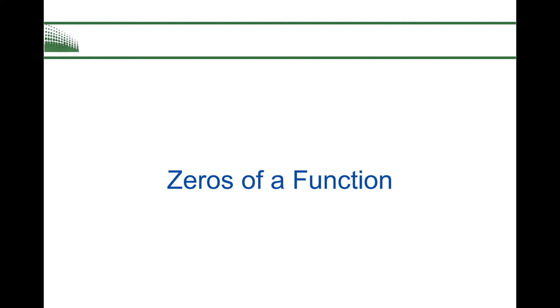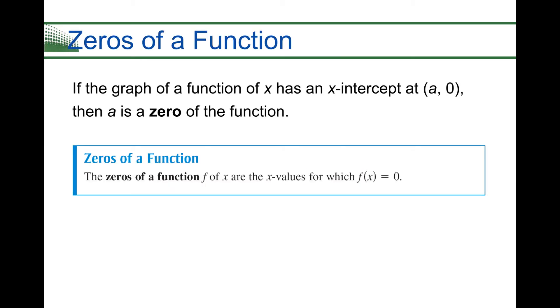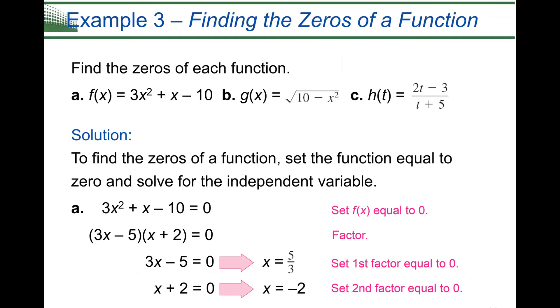And so all this being said, what we're going to be looking at is some zeros of functions. If a graph of a function has an x-intercept at a, zero, then it's called a zero of the function. The zeros of the function, notice our blue box here, are the x values for which f of x equals zero. So all this being said, we've been doing this. A zero of the function, they'll also begin to call a root, or also that is an x-intercept. And what have we been doing in chapter one? We've been taking equations and setting them equal to zero. So look, an equation set equal to zero. So it's not something new, it's just naming what we've been doing.